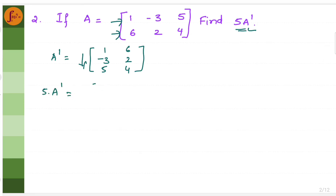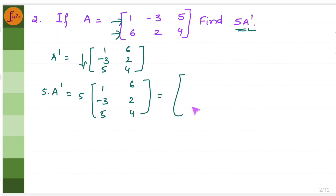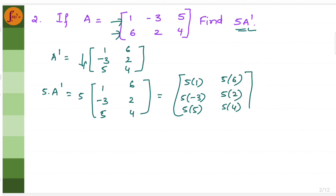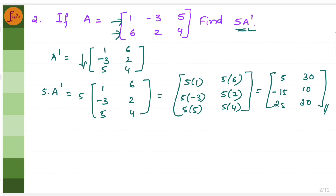Now multiply this particular matrix with 5. So you get 5A transpose, which is 5 times of 1, minus 3, 5, 6, 2, 4. Multiplying each element: 5 into 1, 5 into 6, 5 into minus 3, 5 into 2, 5 into 5, and 5 into 4 — which gives 5, 30, minus 15, 10, 25, and 20. This is the final matrix for 5A transpose.